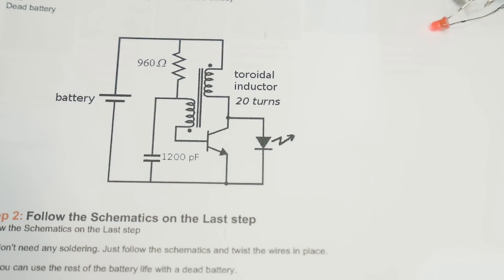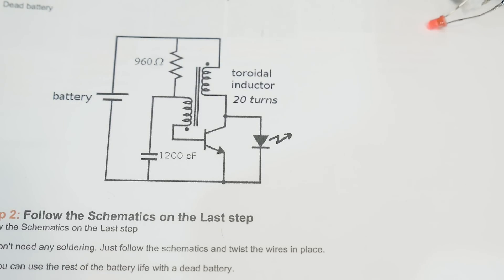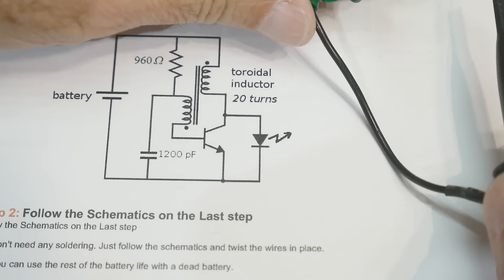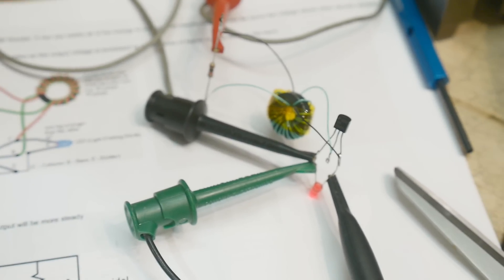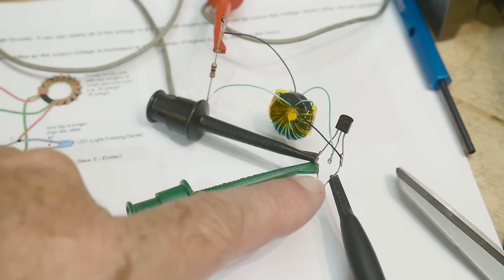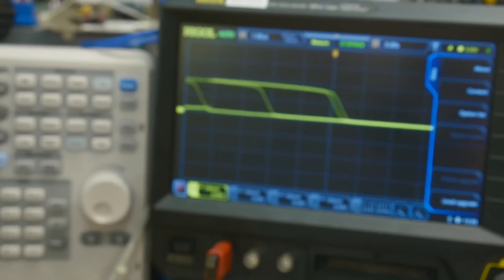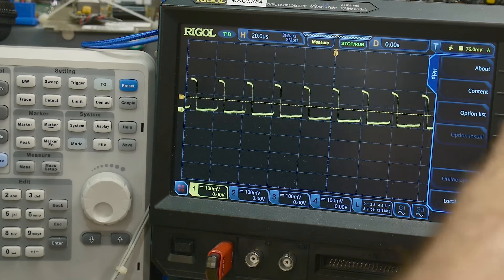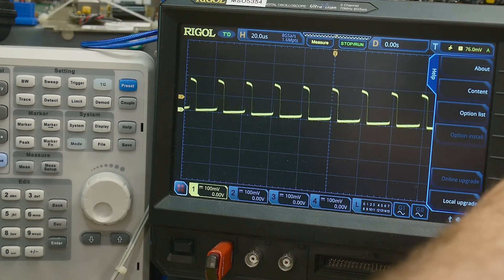I'm just wasting time waiting for my Rigol scope to boot up, which does take some time. I wish it was faster. We will put one ground lead here. And we'll put the oscilloscope across the LED. So across the LED it's looking like that. It's going wacka wacka wacka. Which it should.